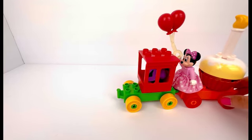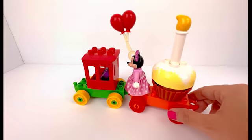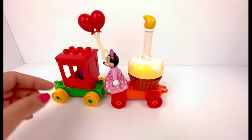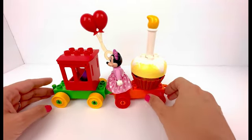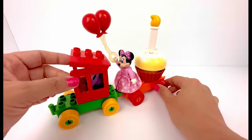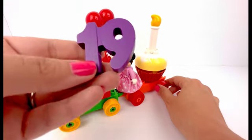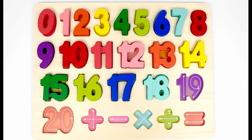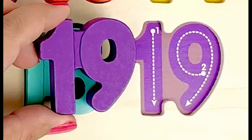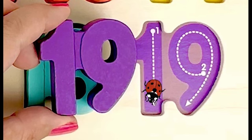Here we have the Lego train. Minnie is holding balloons and there's a cupcake behind her. There's also a wagon in front of her. I wonder what's inside the wagon. It's number 19. Number 19 is made of number one and number nine. Trace it with our ladybug.